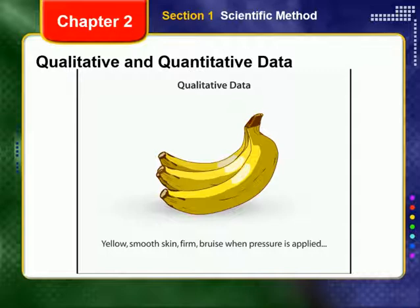Qualitative data describes the qualities of an object. For example, these bananas are yellow and have a smooth skin. They are firm to the touch but bruise if much pressure is applied. Qualitative data may be subjective. In describing the taste of the bananas, one person may categorize them as strongly marked by isoamyl acetate. Another as having a mild flavor reminiscent of apples or peaches. While yet a third might find them sweet and creamy with a very bland flavor.